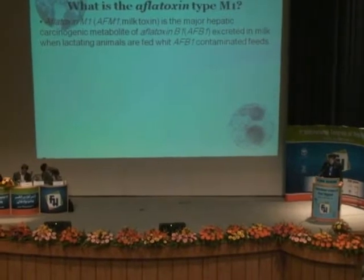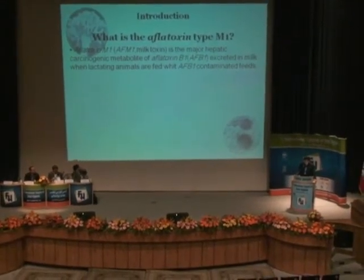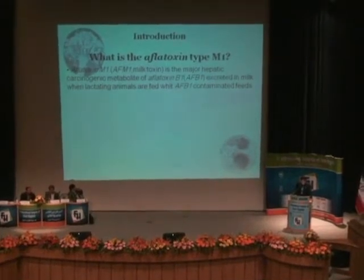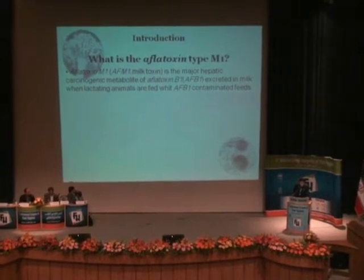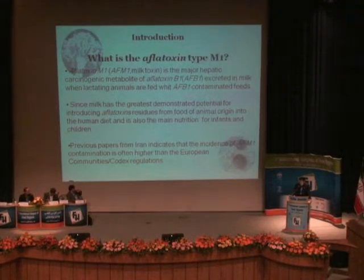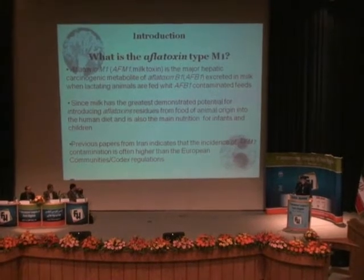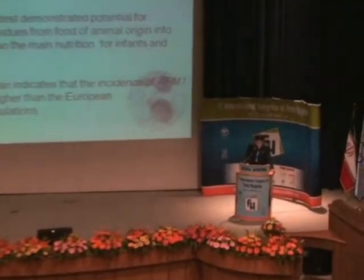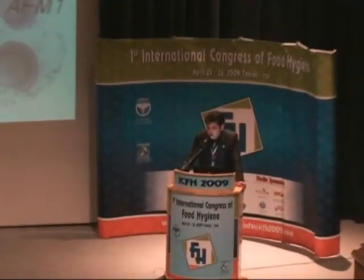Introduction. What is Aflatoxin M1? Aflatoxin M1 is a major hepatic carcinogenic metabolite of Aflatoxin B1, excreted in milk of a lactating animal fed with Aflatoxin B1 contaminated feeds. Since milk has the greatest demonstrated potential for introducing Aflatoxin residues from food of animal origin into the human diet, and is also the main nutrition for infants and children, the purpose of this survey was to determine the natural occurrence and level of Aflatoxin M1 in infant milk formula in Isfahan.